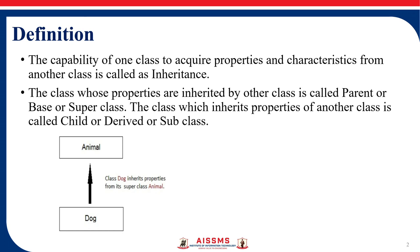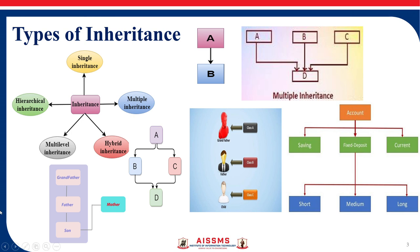Now we will look at the types of inheritance. Here you can see the types: one is single inheritance, then multiple, hybrid, multi-level, and hierarchical. In the case of single inheritance, we have one base class and one derived class.